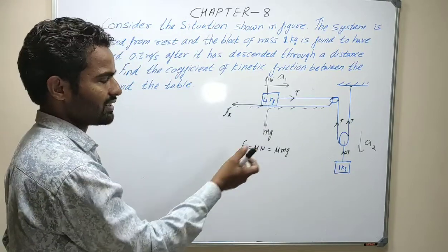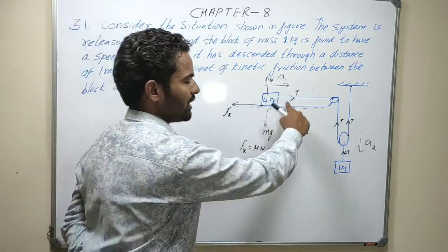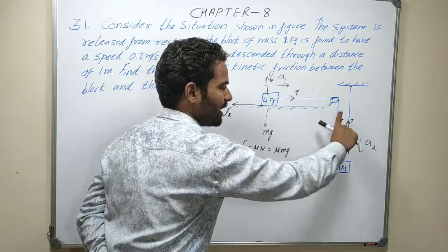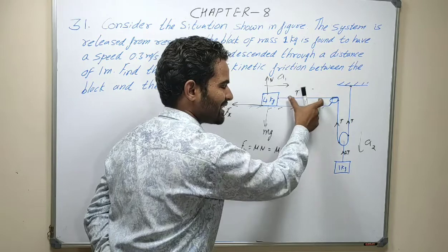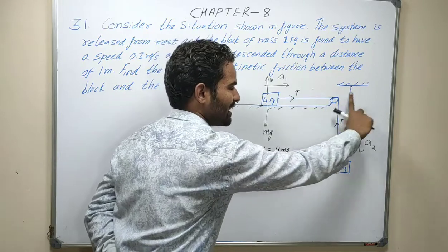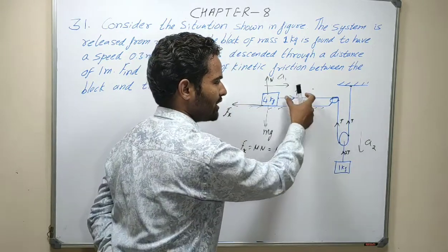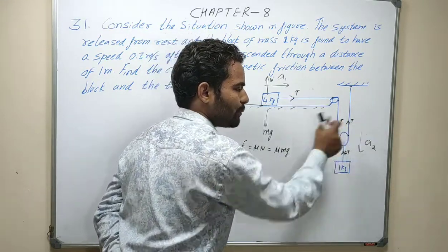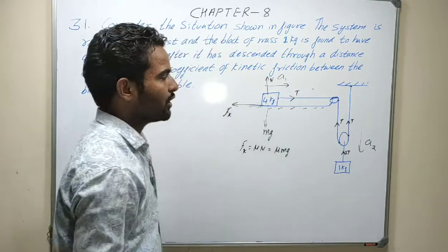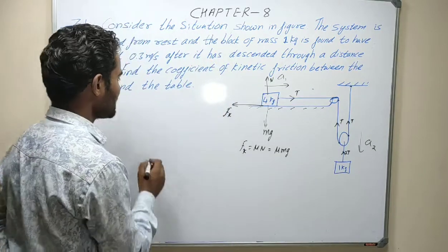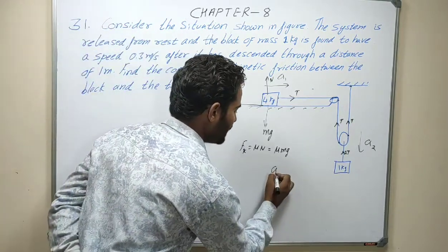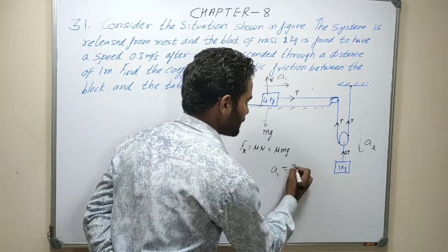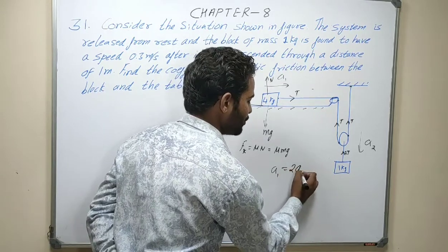The minus sign changes because this length is decreased and this length is increased. So if we get negative, it will be positive. Therefore A1 is equal to 2 times A2.